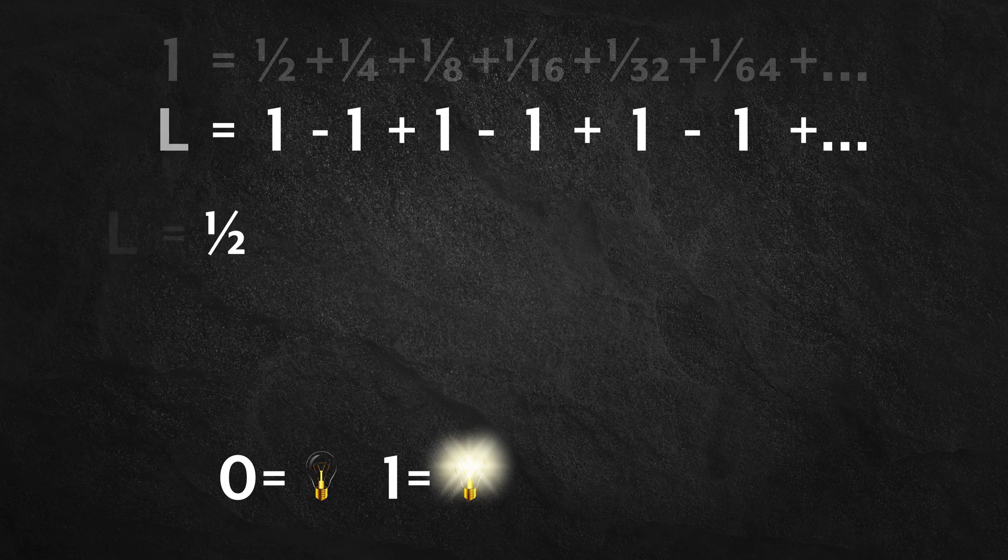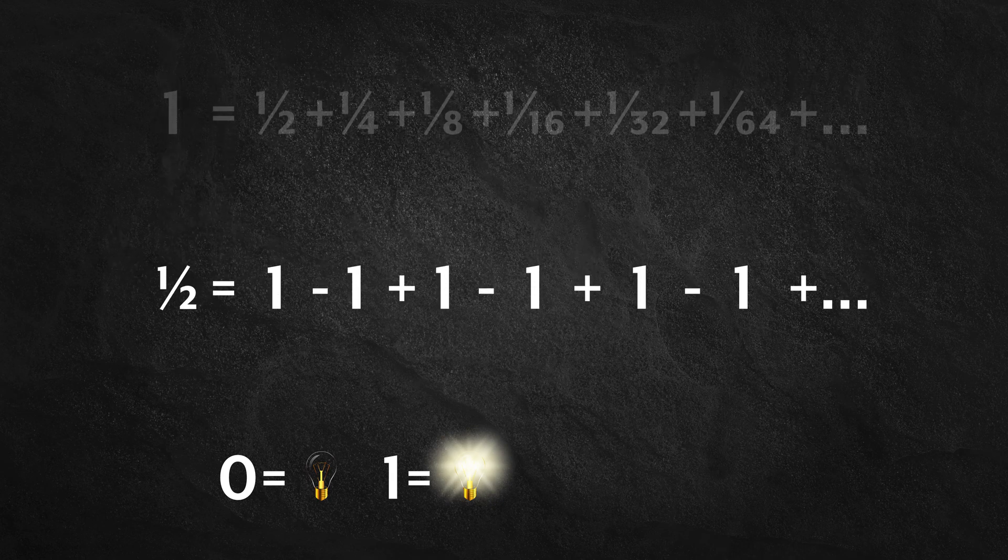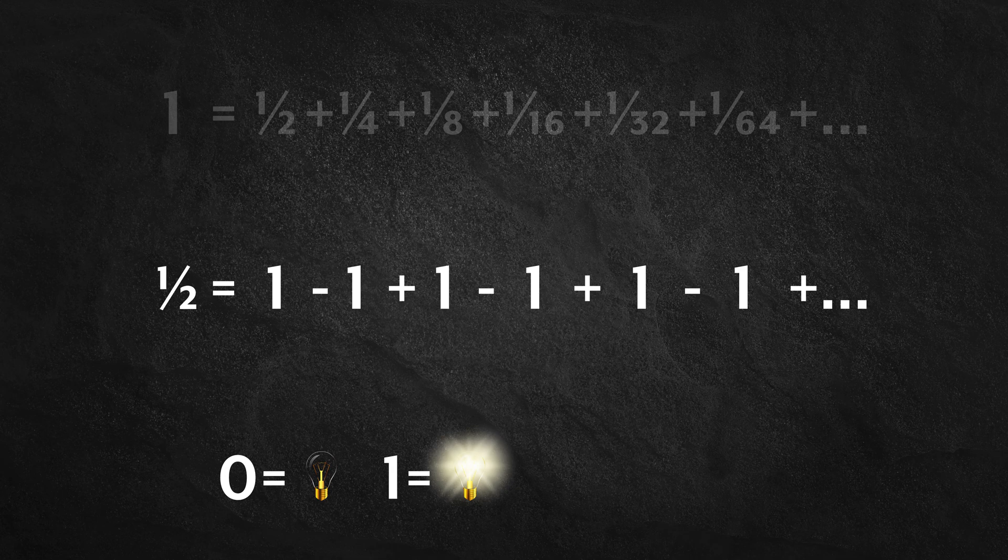The sum of this infinite series should be a half. But in the context of Thomson's lamp, what could a half possibly mean?